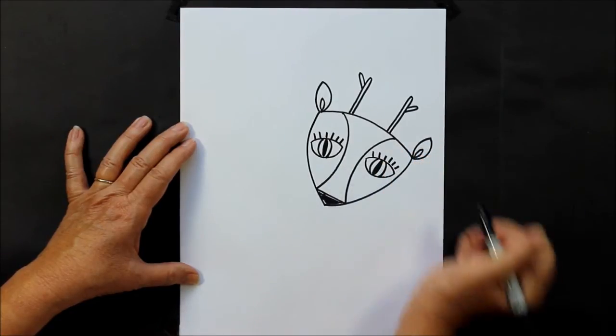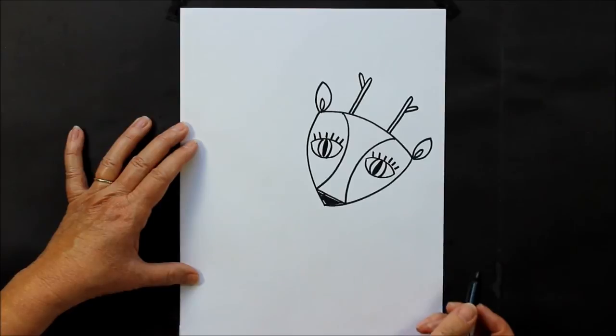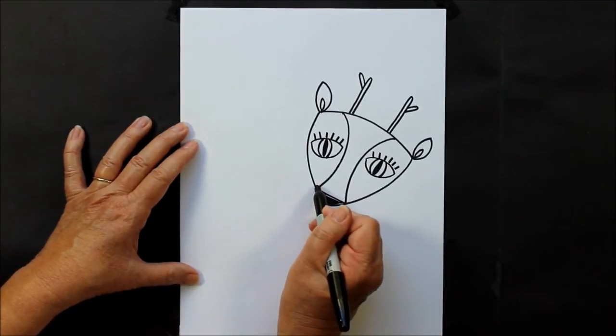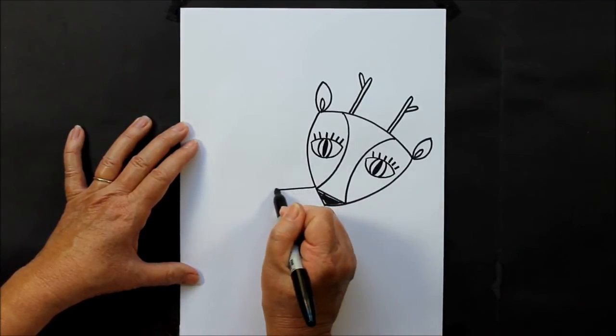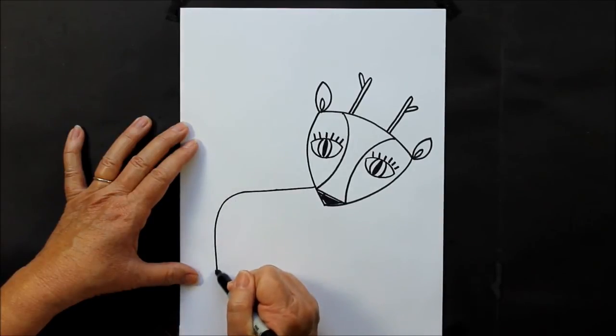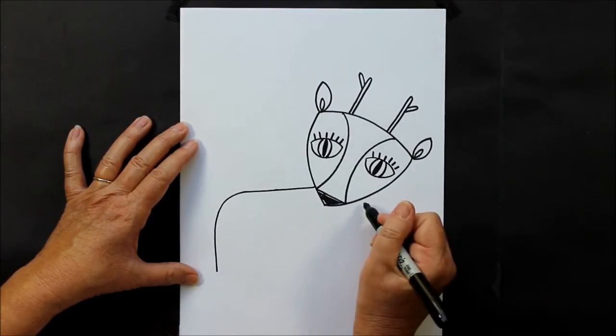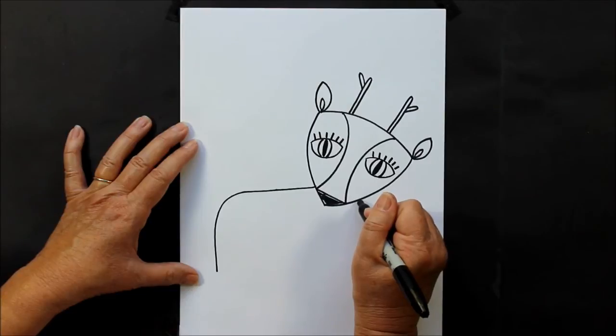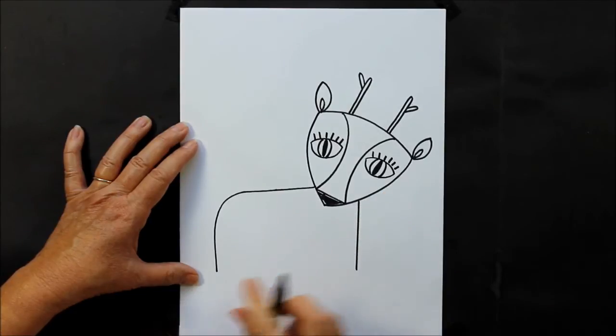Now down below we're going to make her body. What we're going to do is make a straight line coming out and then we're going to curve it down. On this side of her head we are going to make another straight line and these two lines should end up about the same length.